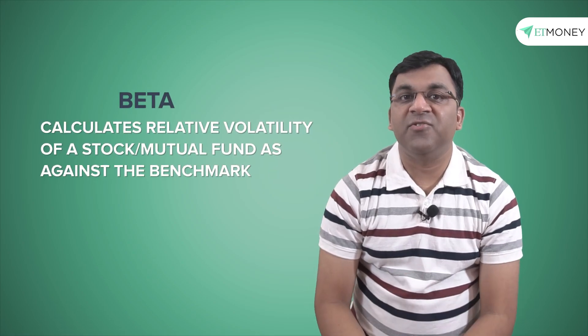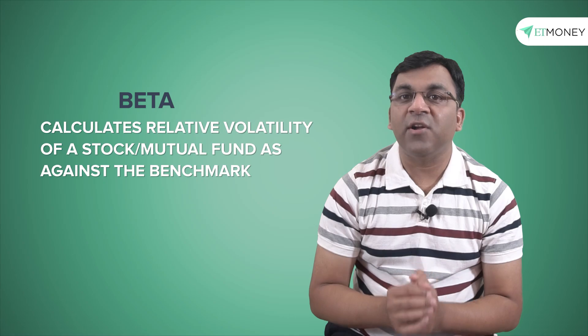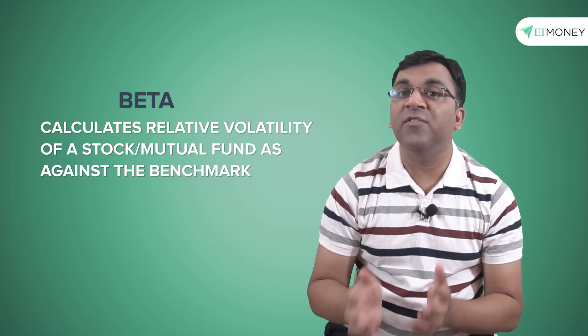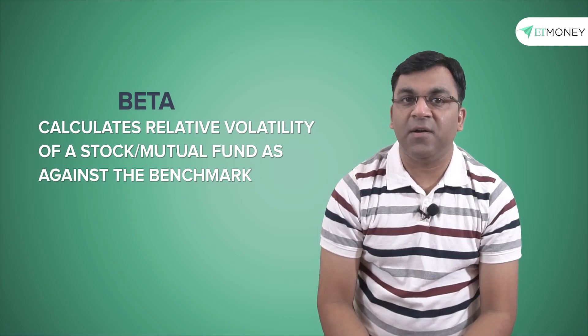Beta is a commonly used risk measure and calculates the relative volatility of a stock or mutual funds returns as against its benchmark. Notice the use of the word relative volatility, which means the beta merely explains the relative riskiness of an asset and does not give the inherent risk of the asset itself. Let's understand this from a more practical perspective.